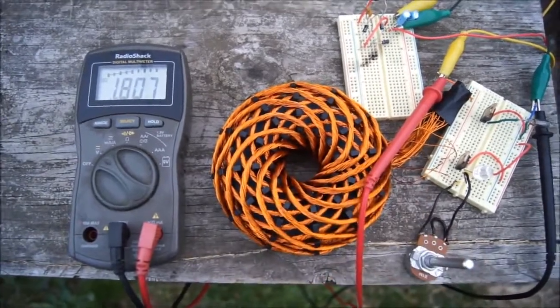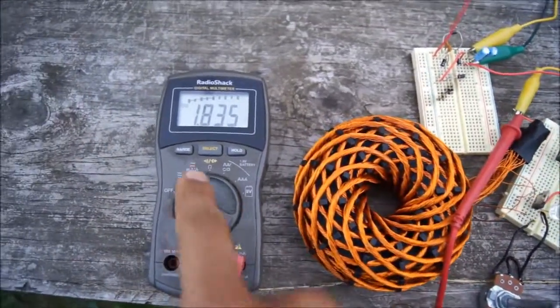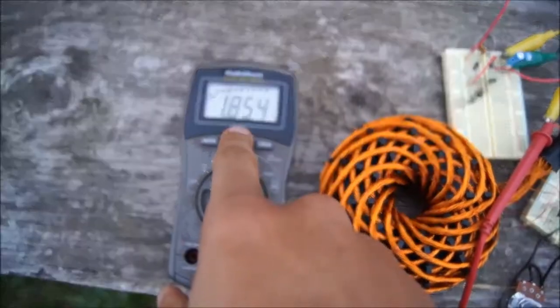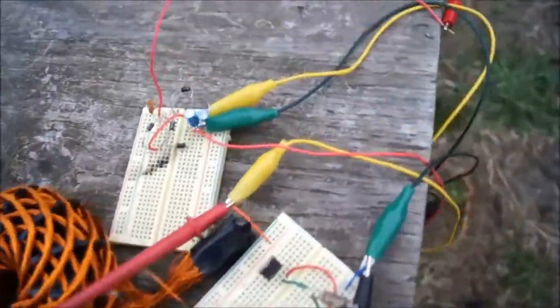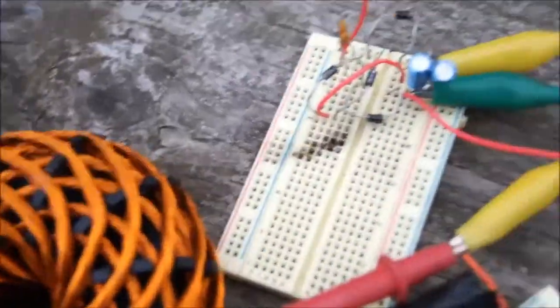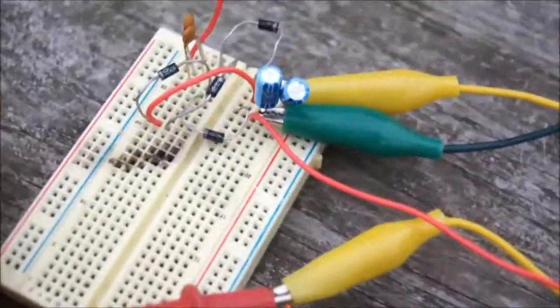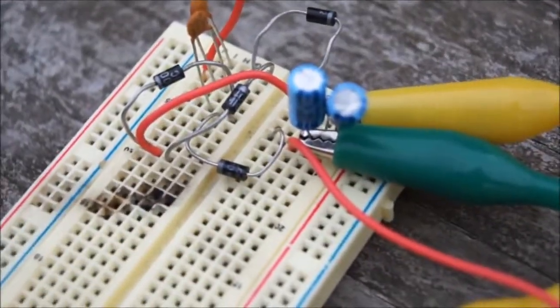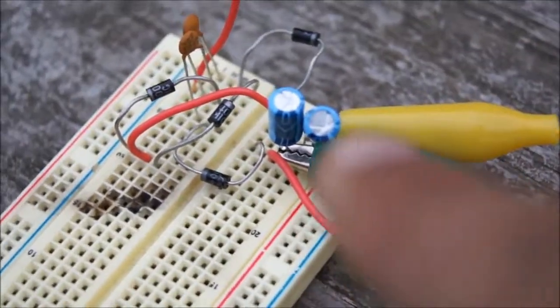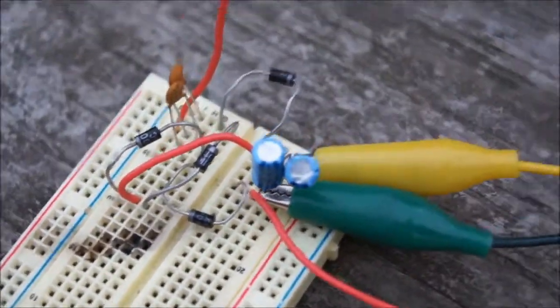The coil is not resonating right now, so I'm able to charge up my little capacitors over here. You're looking at the DC voltage, that's 1.9 volts, and that's charging up those two little capacitors there.